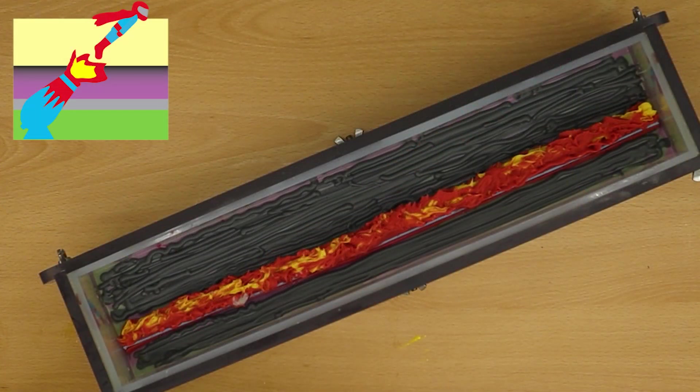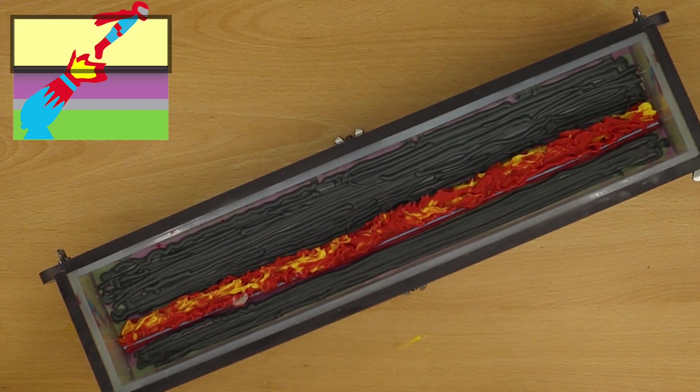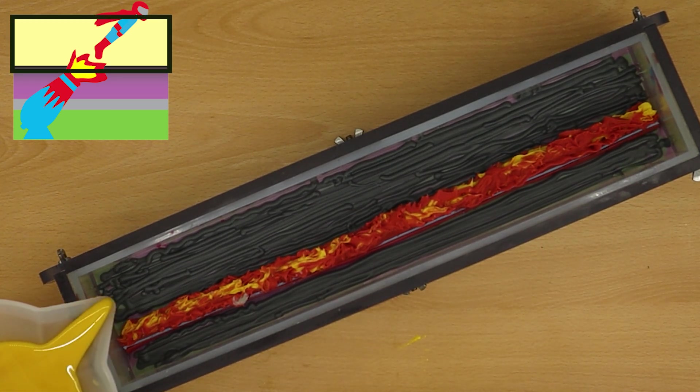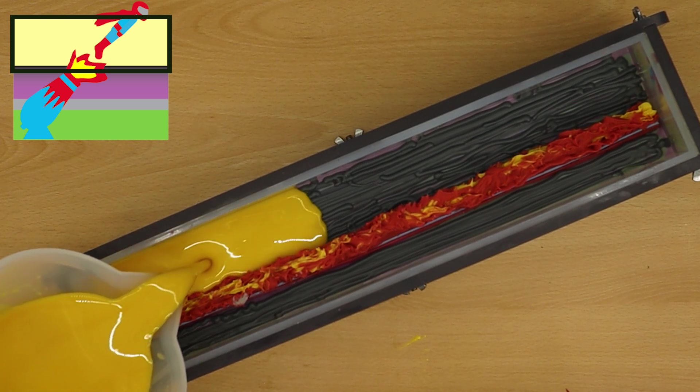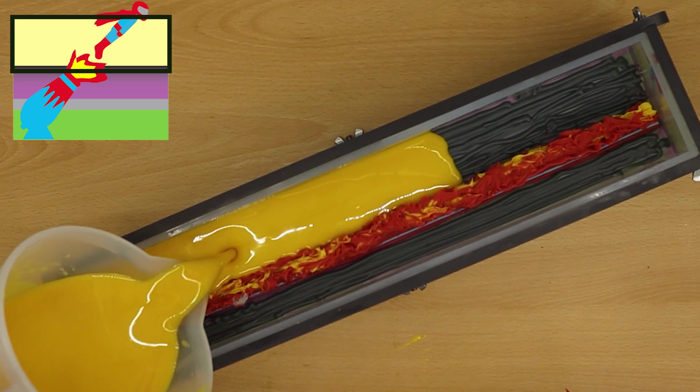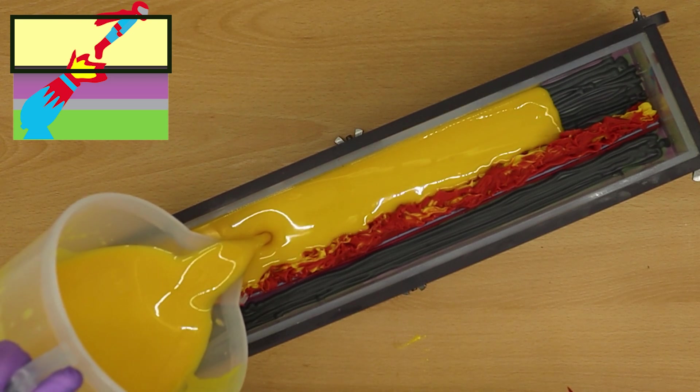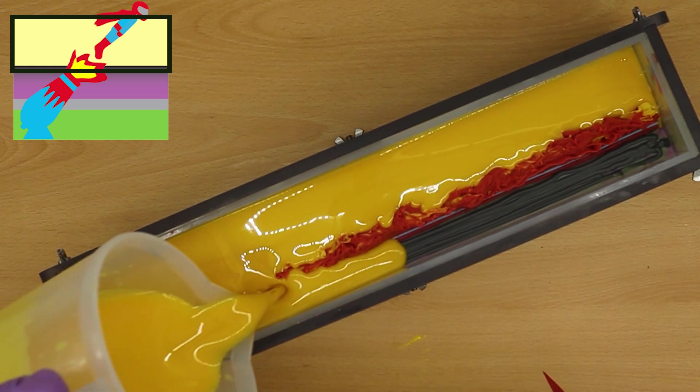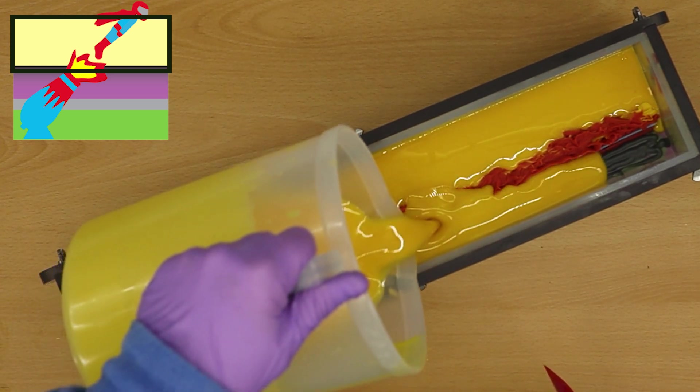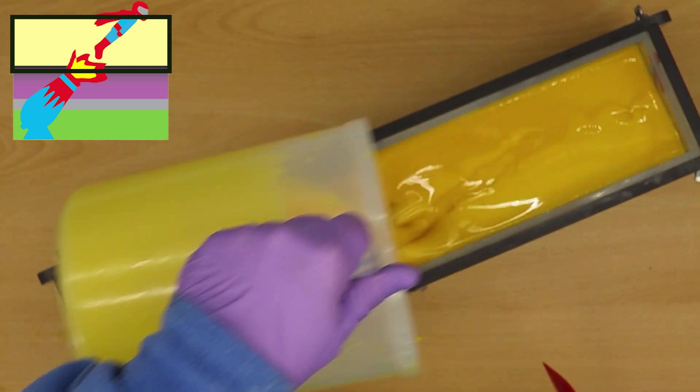So this is just going to be our very top layer. Now it's yellow, not blue because I'm looking that we're actually inside a circus tent. So I'm not looking to do sky on the top. Let's just get that poured on.